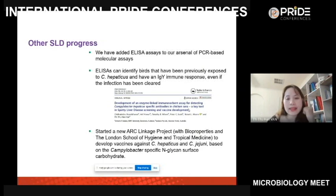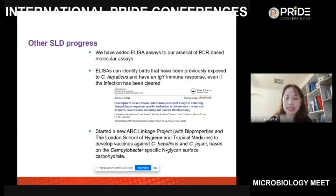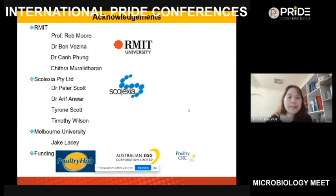We have started a new project, this time with government funding from Australia in collaboration with an industry company and the London School of Hygiene and Tropical Medicine in the UK. We are developing a vaccine against C. jejuni and hope it can also work against C. hepaticus, based on complex glycan surface carbohydrate haptens.